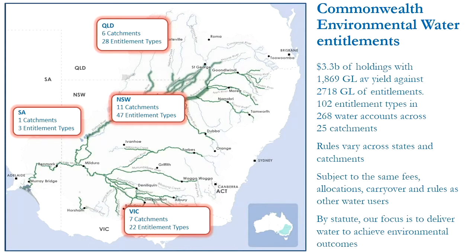We apply our water in the landscape and we have a lot of water. That aggregation of entitlements over time means we now hold $3.3 billion worth of holdings, with a long-term average close to 1,900 gigalitres under 2,700 gigalitres of entitlements. We actually have 102 different entitlement types across the basin, each with different rules that apply. We operate within the same boundaries as other irrigators and consumptive users, but we're actually applying our water in-stream. Applying our water in-stream is actually one of the risks because the accounting systems haven't been built for that type of use.